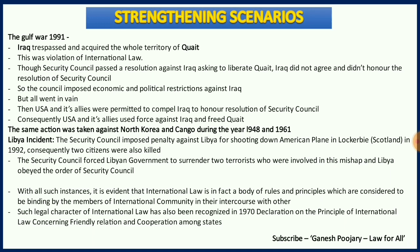Today there are many scenarios strengthening the thought that international law is no more the vanishing point of jurisprudence. One such case law is the Gulf War of 1991. Iraq trespassed and acquired the whole territory of Kuwait, and the Security Council passed a resolution saying this is a violation of international law, so Iraq had to liberate Kuwait. However, Iraq was not interested in listening to the Security Council. So the USA came into the picture along with its allies and they started putting a lot of international pressure on Iraq. Finally, Iraq agreed to the Security Council. This is how the international community brings pressure on those who do not follow treaties. Similar action was taken against North Korea and Congo during the years 1948 and 1961 respectively.